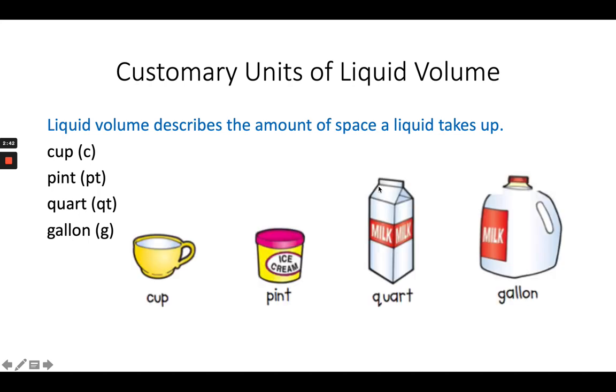As you can see, a cup might be like a coffee cup. A pint might be the size of the smaller ice cream. I know some ice cream can come in bigger amounts like a gallon, but this is more of the smaller ones that you see in the freezer section. We have a quart, which would be a smaller amount of milk, and then of course a gallon.